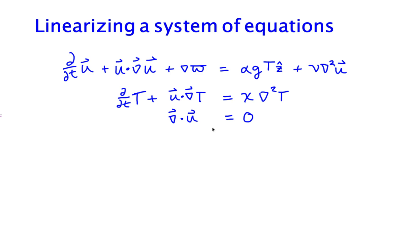In this video we're going to discuss how to linearize a system of equations. We previously linearized just the temperature equation by itself, but here we have the full Rayleigh-Benard Boussinesq set of equations. We have variables u being evolved, variable temperature t being evolved, and the continuity equation that the divergence of u is equal to zero.